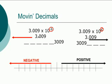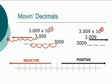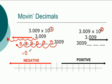Starting at the decimal point in 3.009, we move it back 6 spaces to the left, filling in zeros for each empty place. So 3.009 times 10 to the negative 6 actually equals 0.000003009.